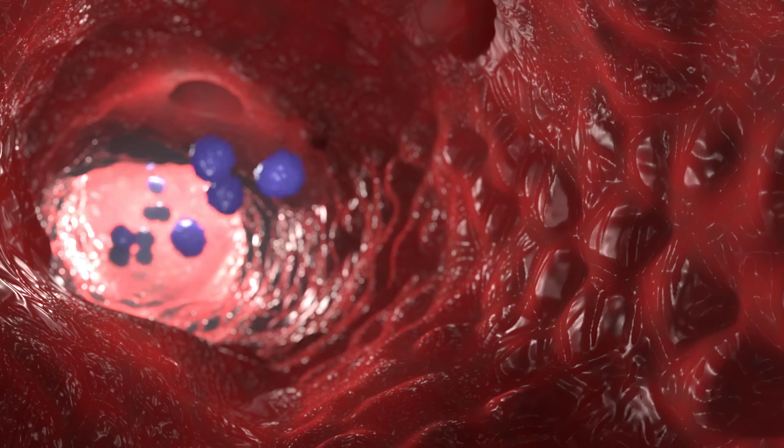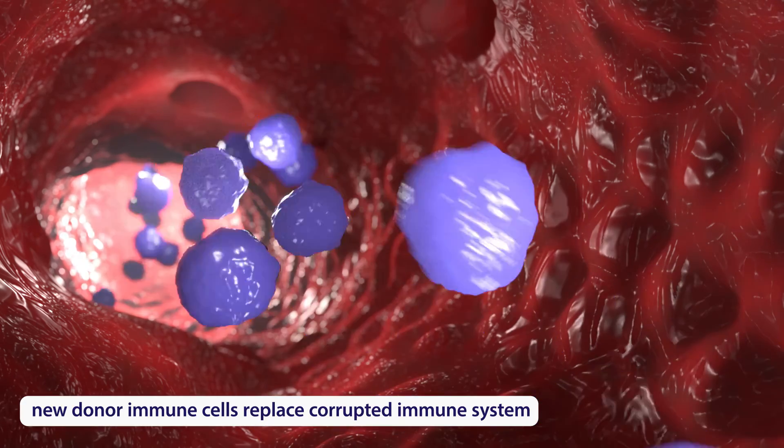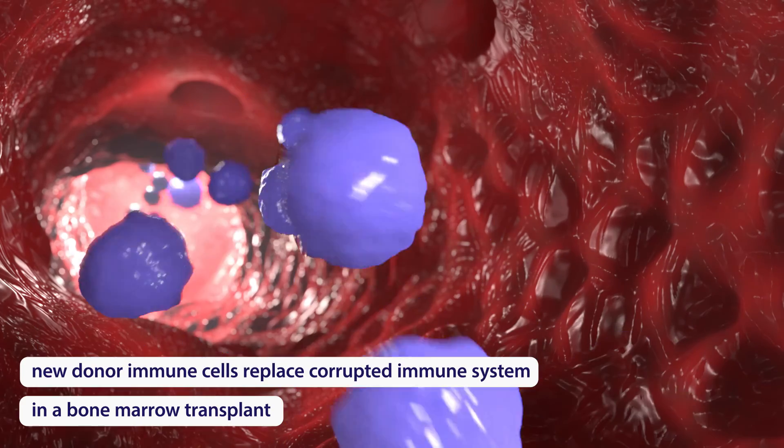So, we can destroy the corrupted immune system with radiation and replace it with a new one from a donor. This is a bone marrow transplant.